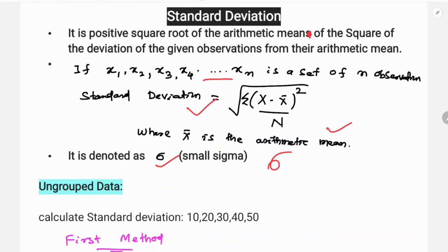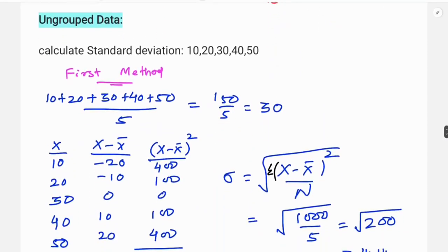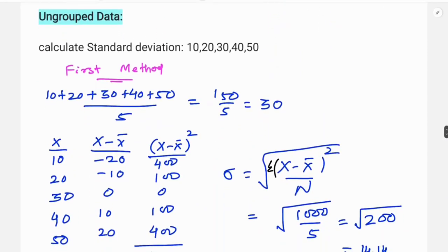Standard deviation for ungrouped data. Let us calculate standard deviation for 10, 20, 30, 40, and 50. First, find the arithmetic mean: 10 plus 20 plus 30 plus 40 plus 50 divided by 5 equals 150 by 5, which is 30. So 30 is the arithmetic mean.